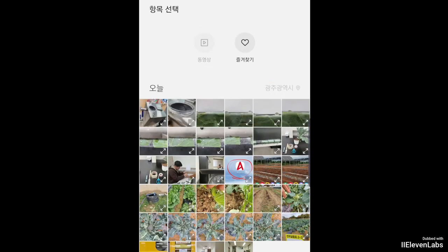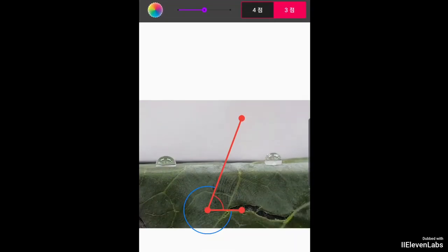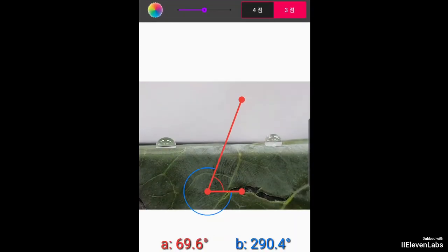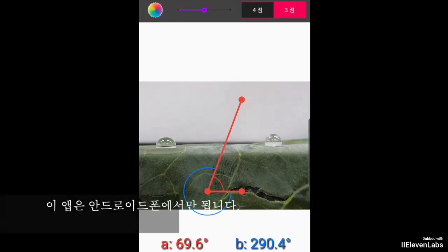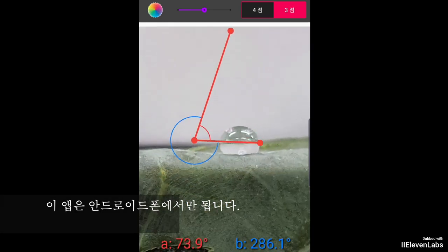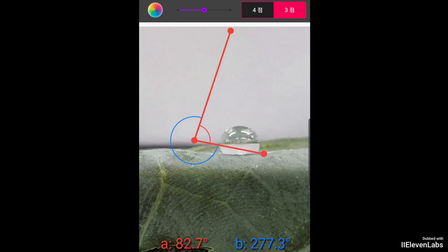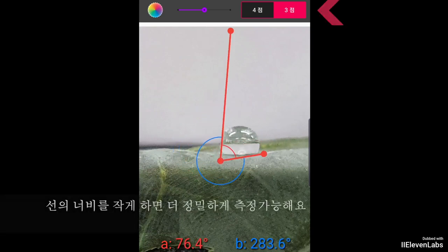Students can easily measure the contact angle of the water droplet in the photo they just took using the Angulus app for Android or Angle Meter 360 for iPhone. By adjusting three points on the screen to improve precision, reduce the line width for better accuracy.